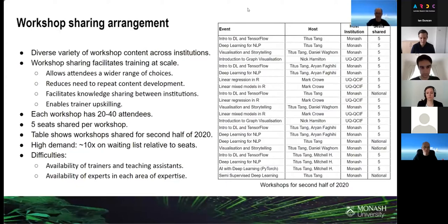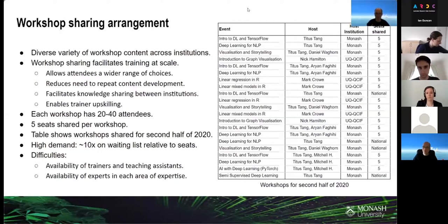This arrangement also facilitates the sharing of knowledge between institutions, because each organization has strengths in specific areas of research. By sharing not only the workshop content but the availability of lead instructors and senior researchers across institutions, this allows staff and students to access skill sets and expertise they would otherwise not have. From a trainer's perspective, it allows lead trainers and teaching staff to upskill themselves on areas of interest, which allows them to contribute back to the teaching and research community.